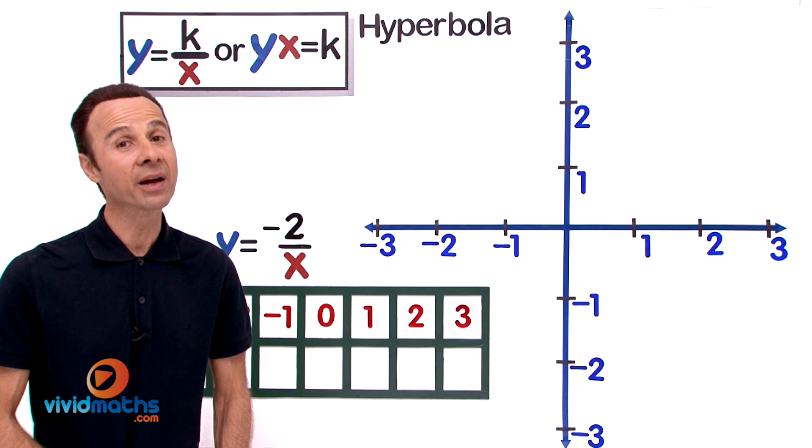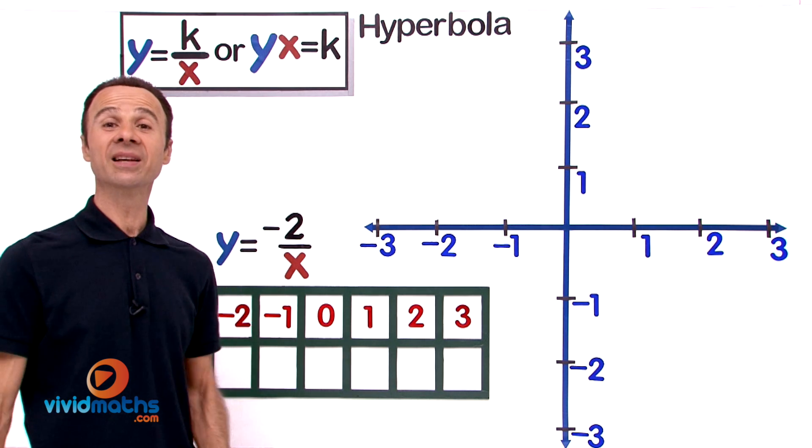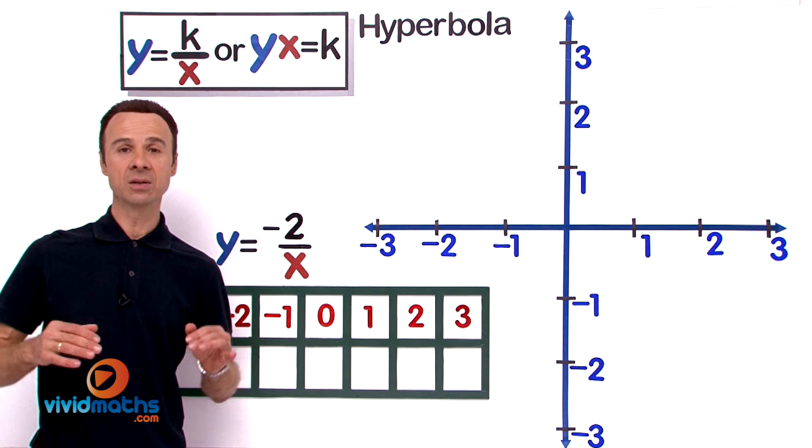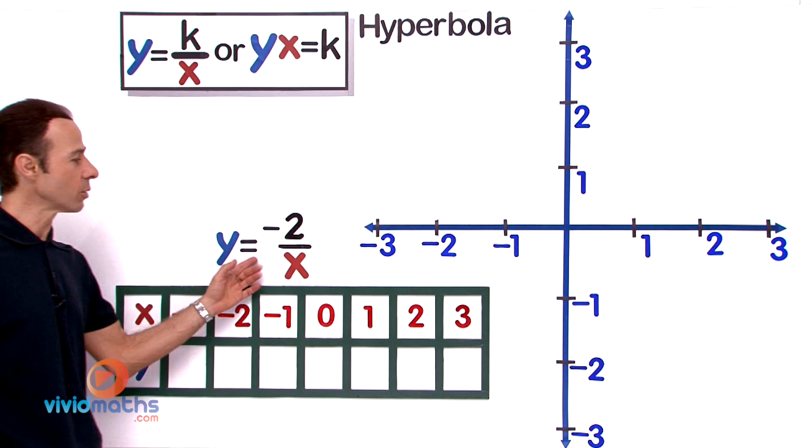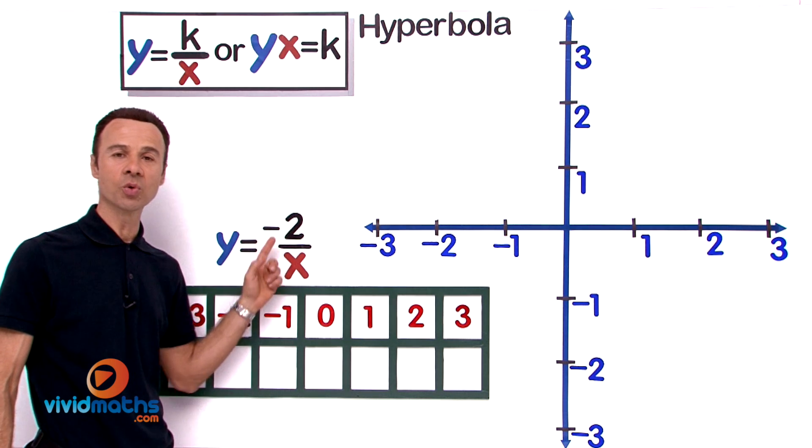Hi guys, it's time to draw a hyperbola. In this particular example we have a negative hyperbola and here is the equation: y equals negative 2 over x.